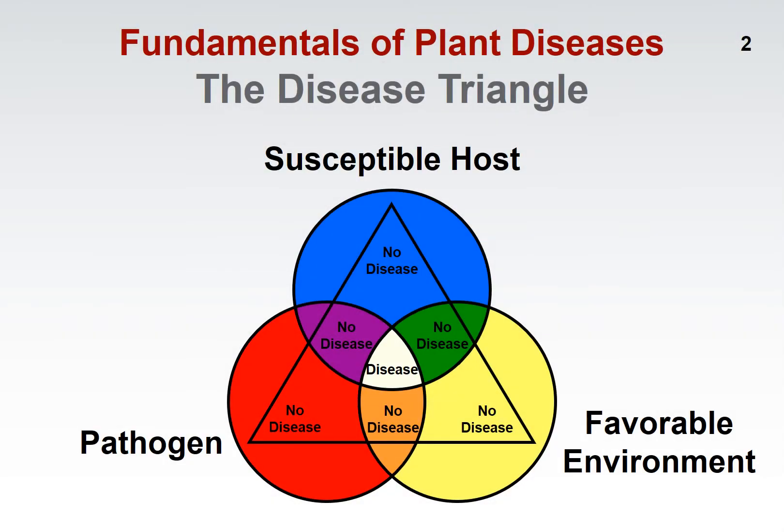If we're going to start talking about plant diseases, the first thing we really need to do is define what we mean by a plant disease. The way I like to do that is in the context of what I call the disease triangle. This is basically a conceptualization developed by plant pathologists to describe the three important components that you need to have a plant disease.